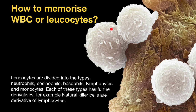Leukocytes, colloquially known as white blood cells or WBCs, are clear, colorless cells that circulate in the blood and in the lymph and are an integral part of the immune system. As you see, leukocytes are divided into the following types.